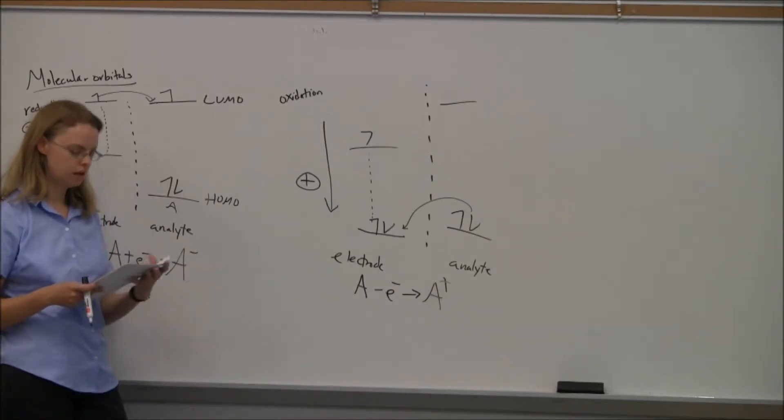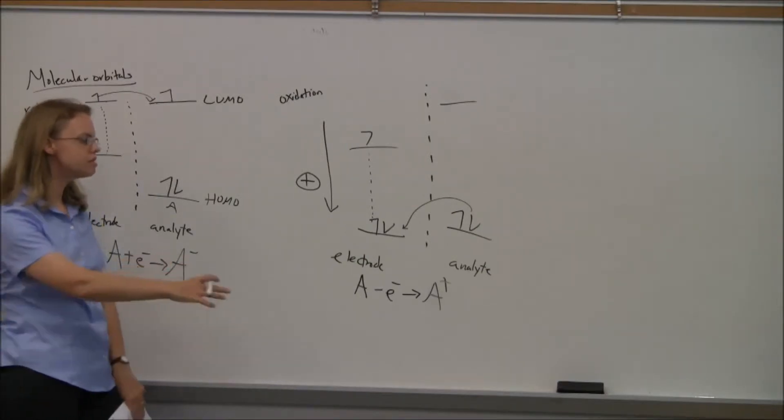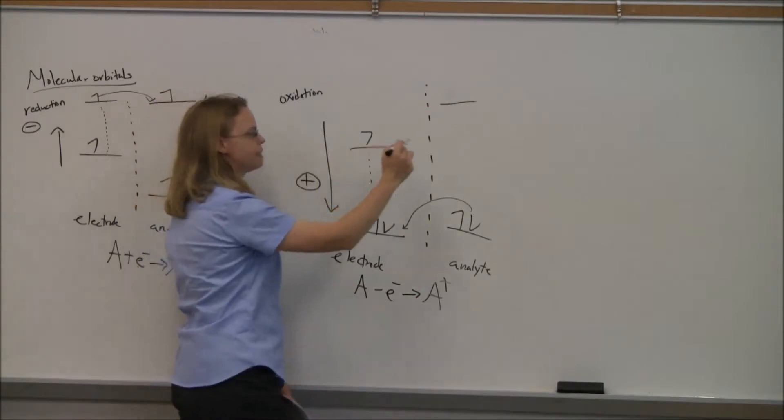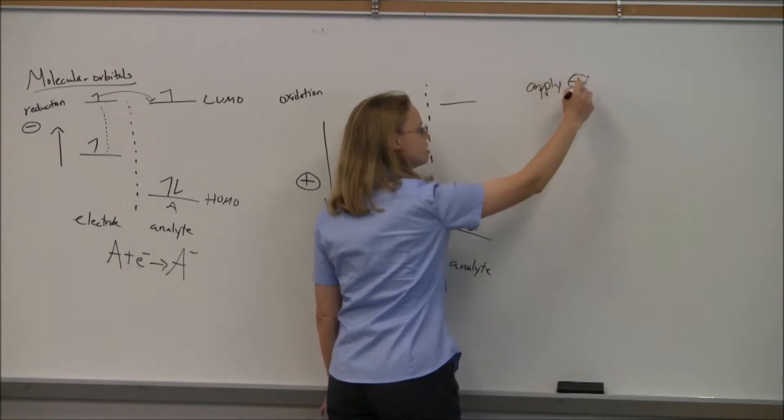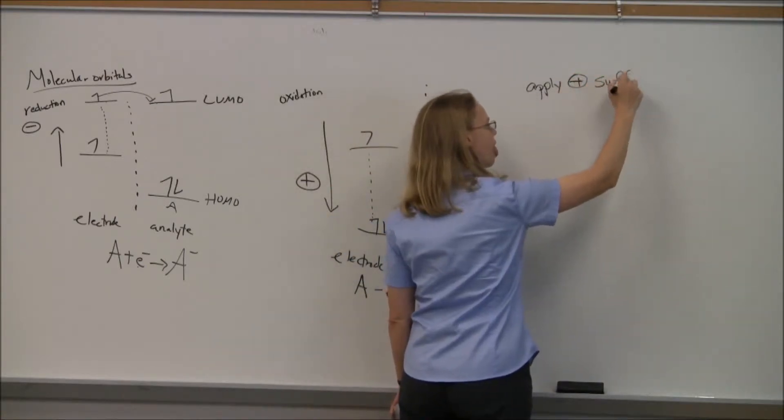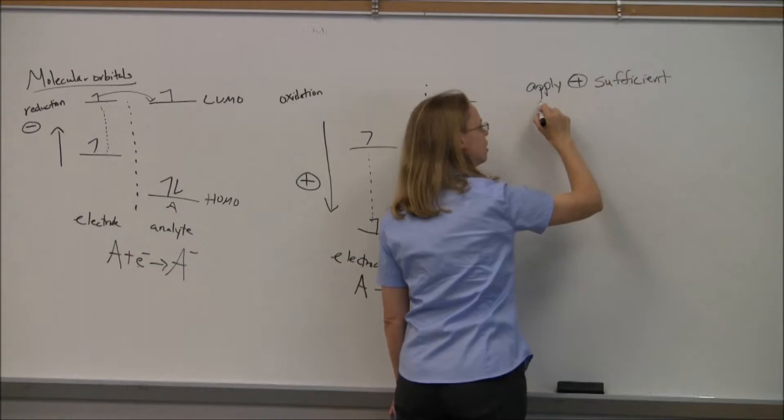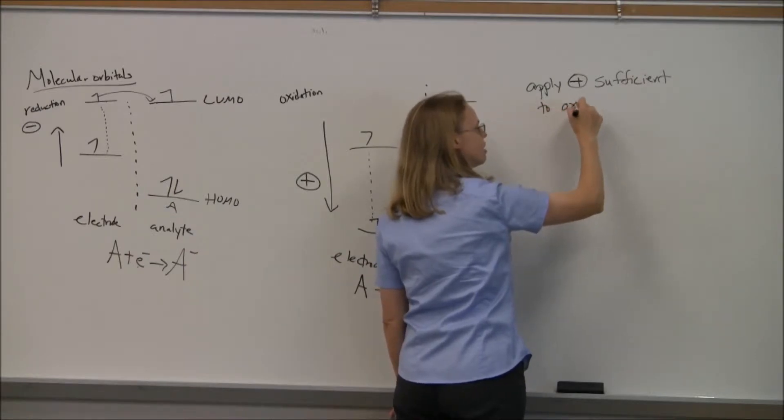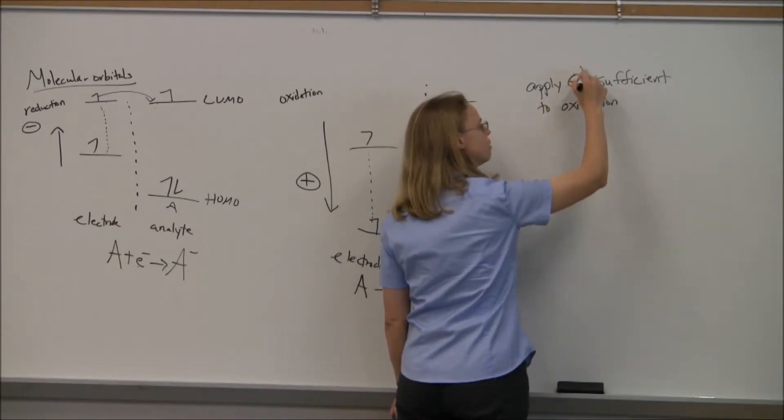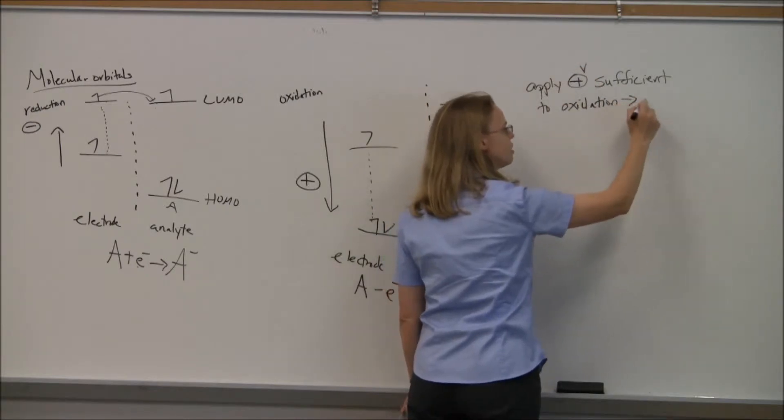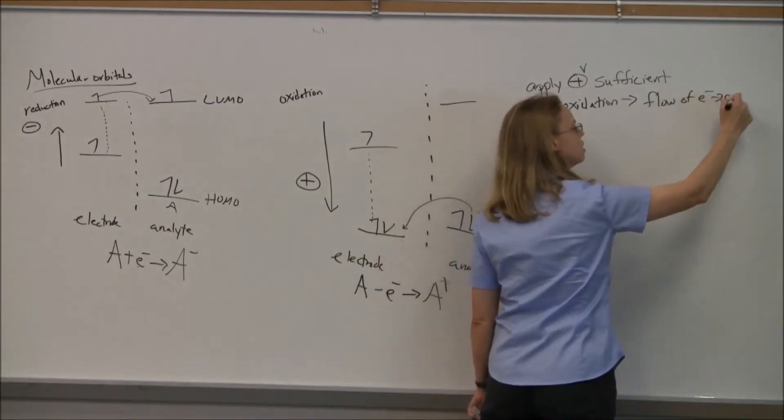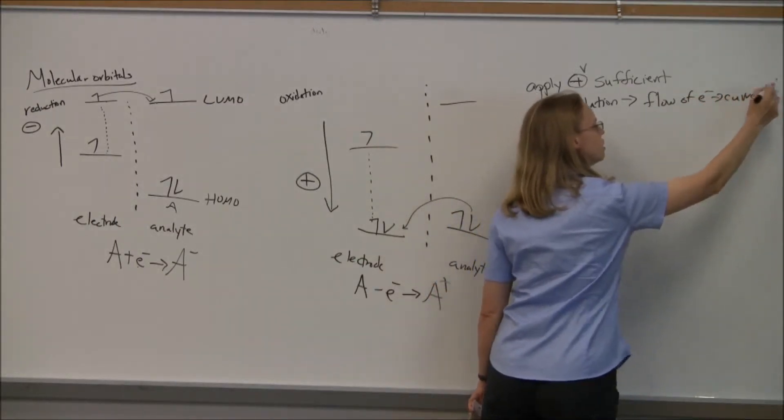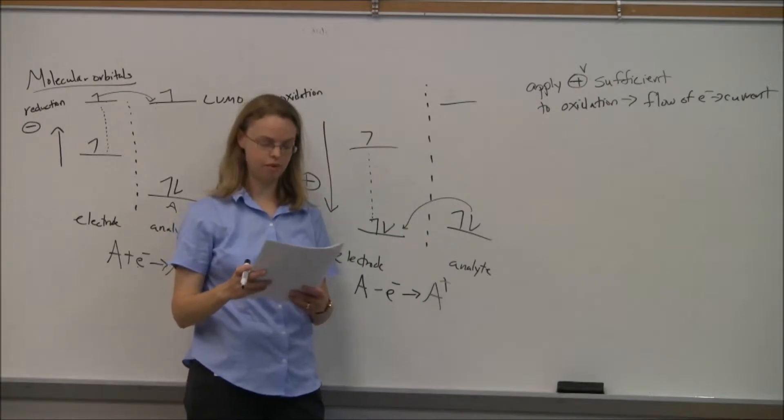So if we were to do something like this and we apply a potential sufficient to do that, then we will start to get a flow of electrons. So then we'll start to get a current if we do that.